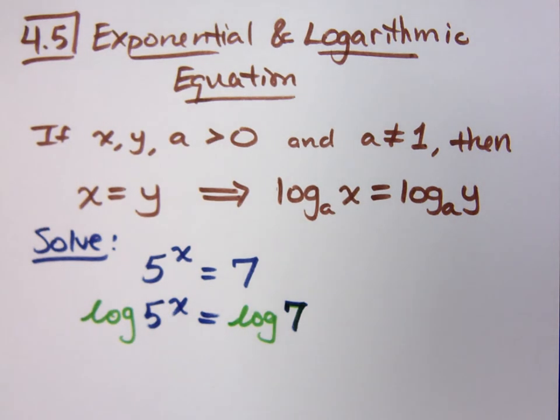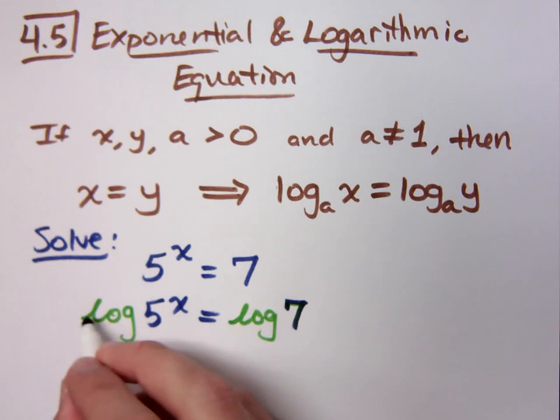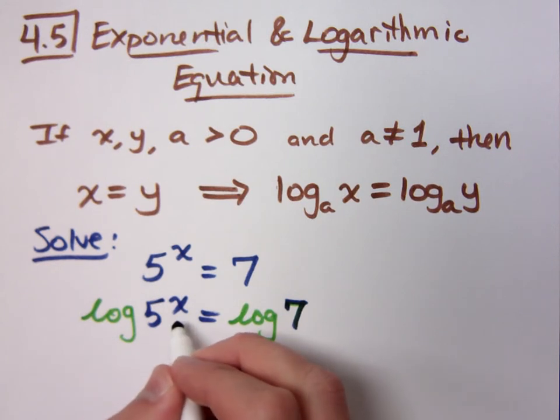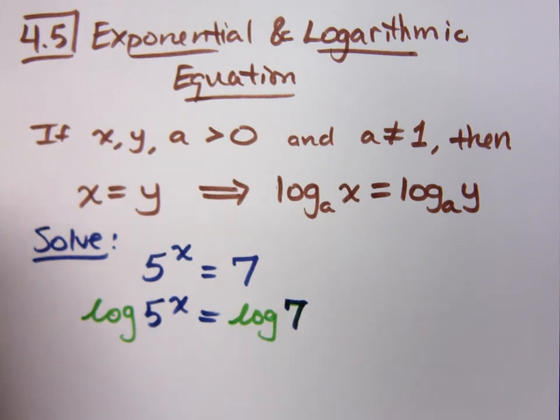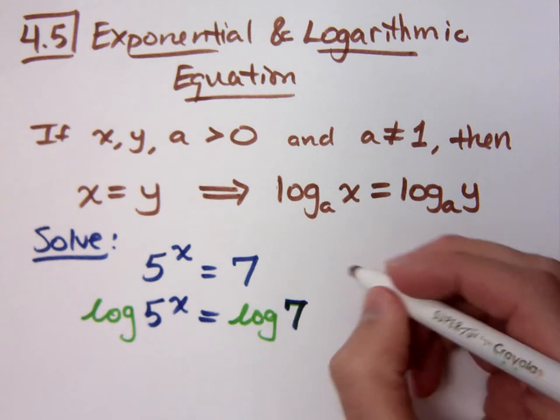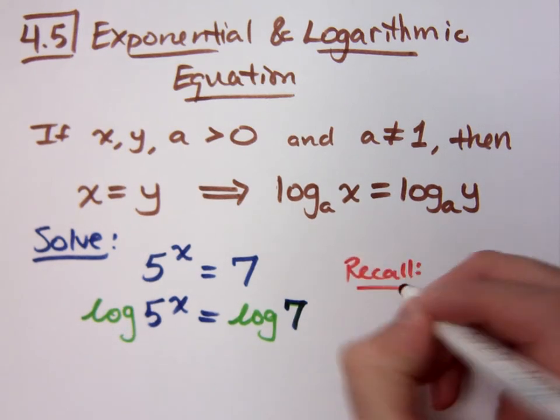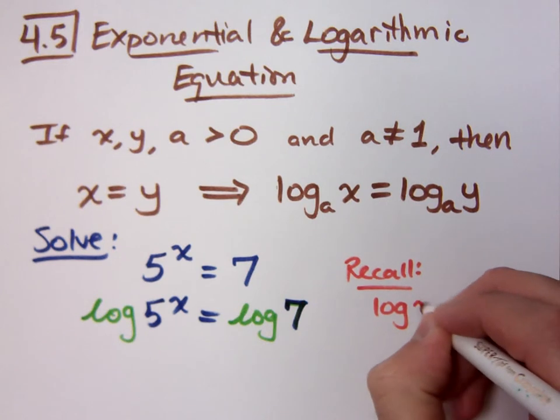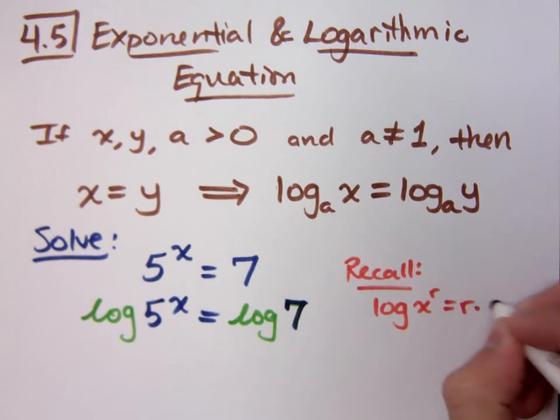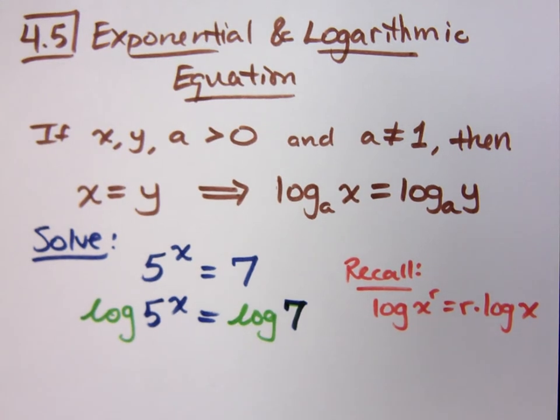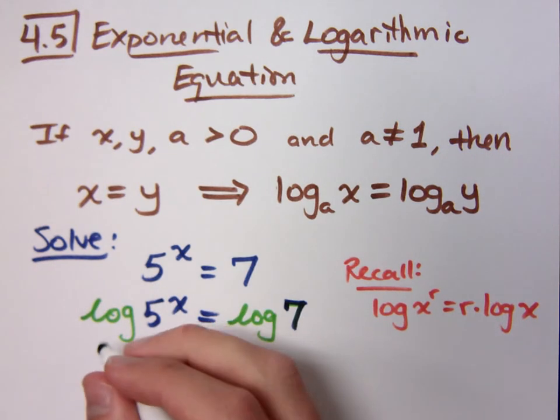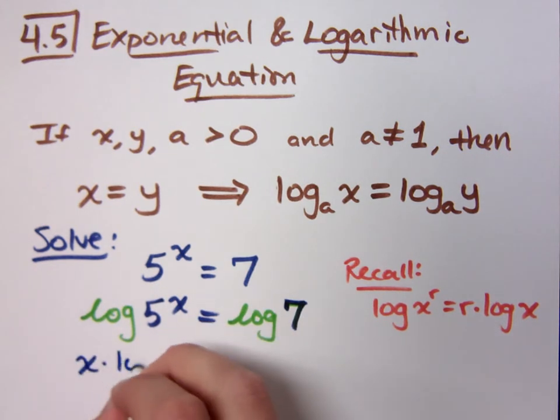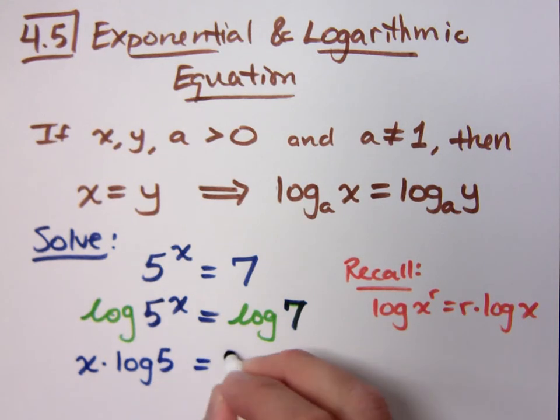And let me show you why this is useful. One of the properties that we have with logarithms was that when you have a power inside of the log, what can you do with that power? Recall that when you have log of x to the r, you can write that as r times log of x. So how is that useful to me in this problem? I can write this as x times log of 5 is equal to the log of 7.